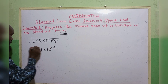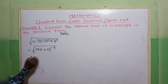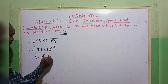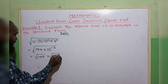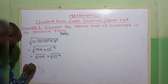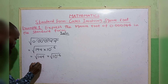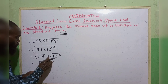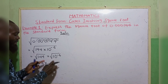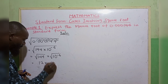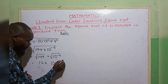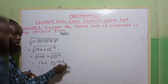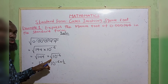Now we take the square root. This can be written as the square root of 144 multiplied by the square root of 10 raised to the power of minus 6. The square root of 144 is 12. For the second part, we can't directly take the square root, but the square root can be expressed as 10 raised to the power of minus 6 times one half.